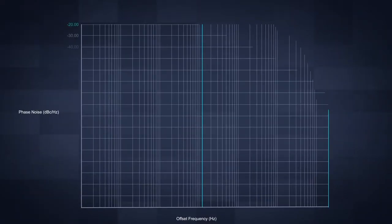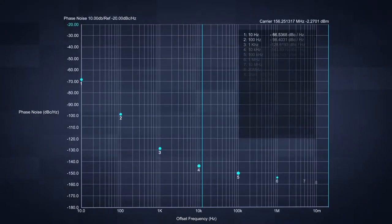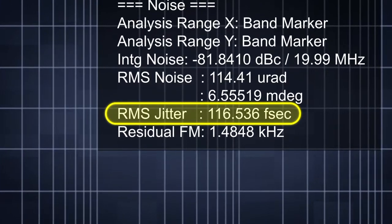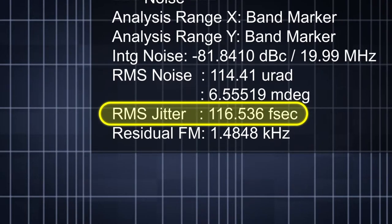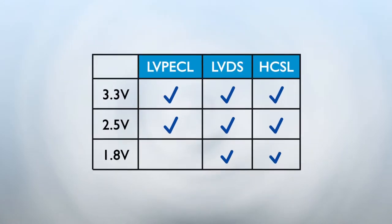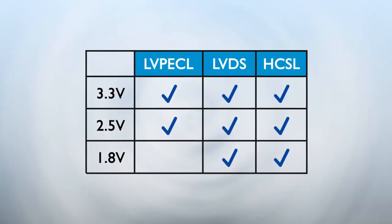The ClearClock solutions feature a quiet third overtone technology that reduces power consumption, while maintaining sub-120 femtosecond typical RMS jitter performance. These oscillators are available with output configurations at various bias voltages.